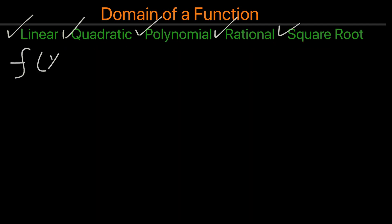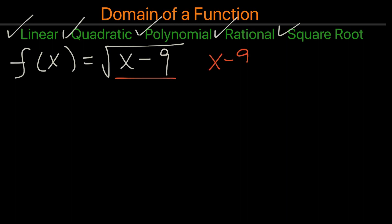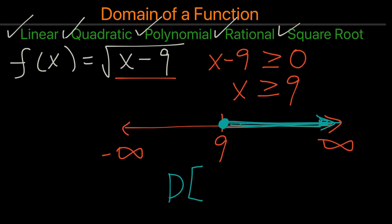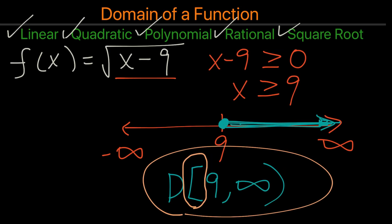Now here's a square root problem. For this equation, we look at x minus 9 inside the square root, and we know that x minus 9 can be 0 or greater than 0. So x would be greater than or equal to 9. When writing out the interval notation, we will have 9 with a solid circle going in this direction. The domain will use a bracket at 9 — the bracket is important because 9 is included — and then infinity.